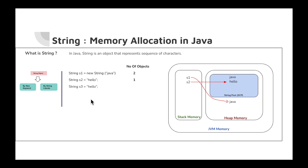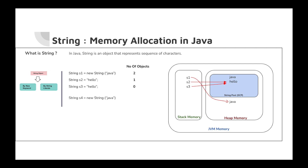Now let's say I create another string with the same content "hello" but with a different reference variable. What will happen? When you create a string with the same content using string literal, JVM looks into the string constant pool and sees "hello" is already present, so it doesn't need to create a new string. It will just create a new reference variable and point it to the existing string already present in the string constant pool. So how many objects will be created? Zero, because we haven't created any new string - we just pointed to the existing string.